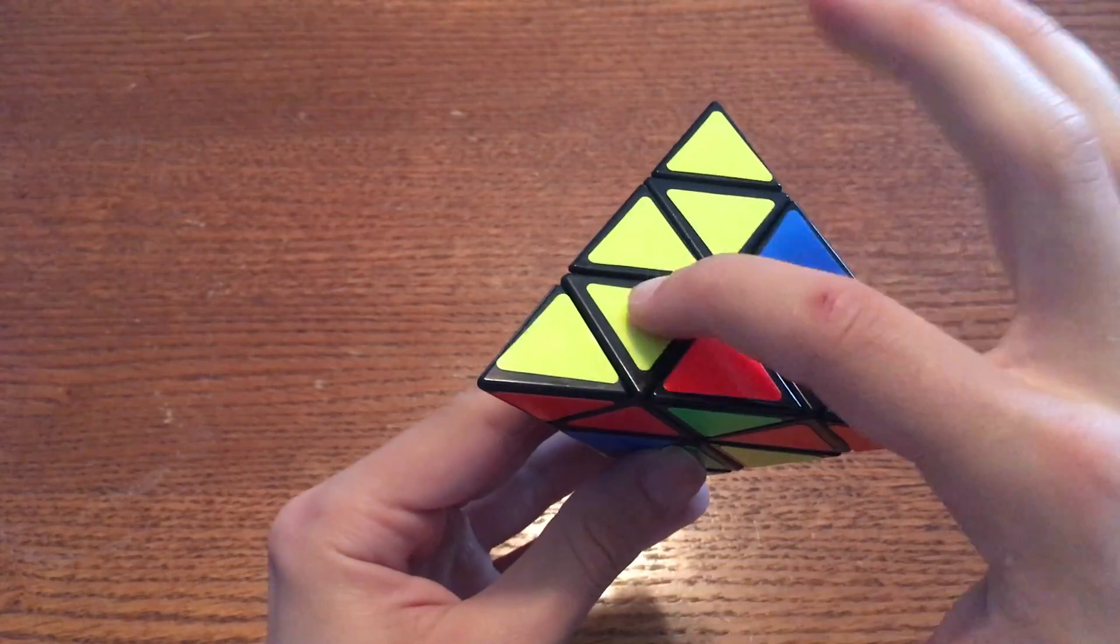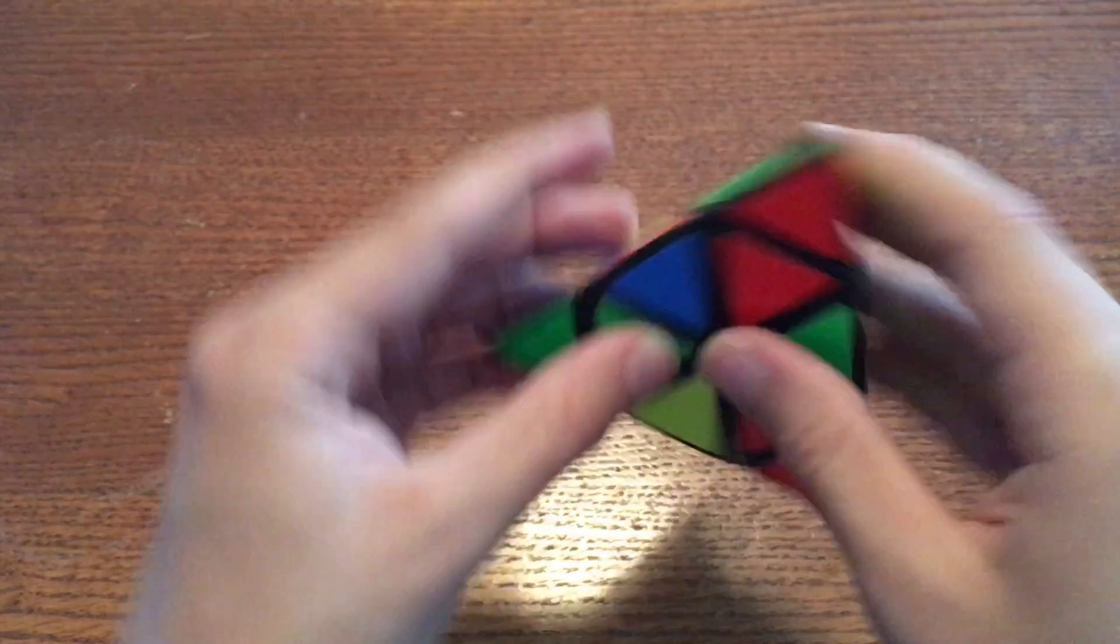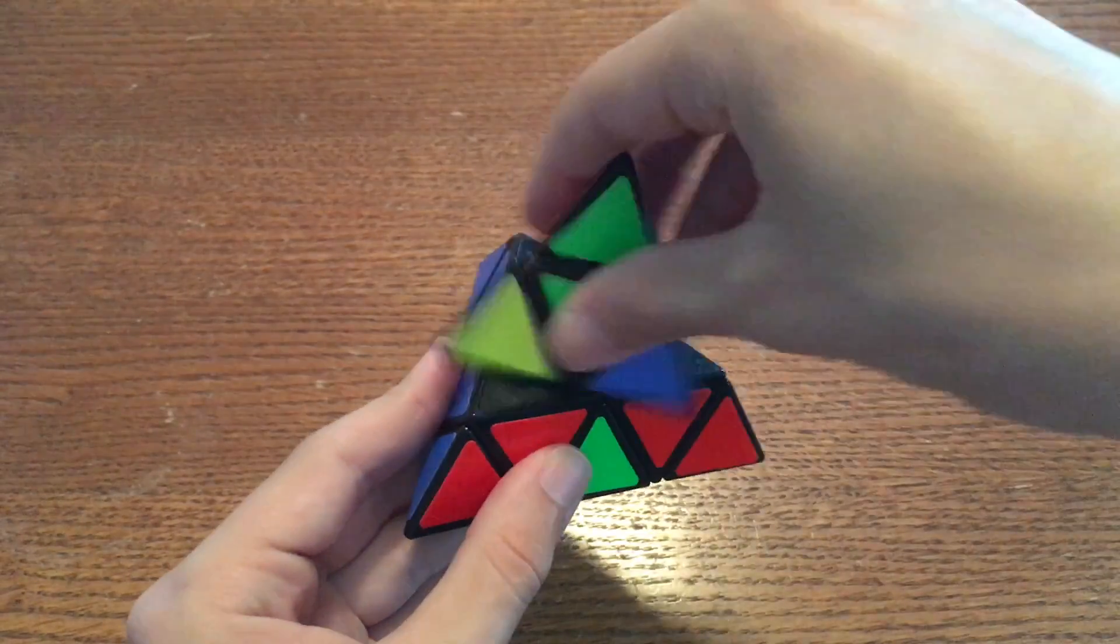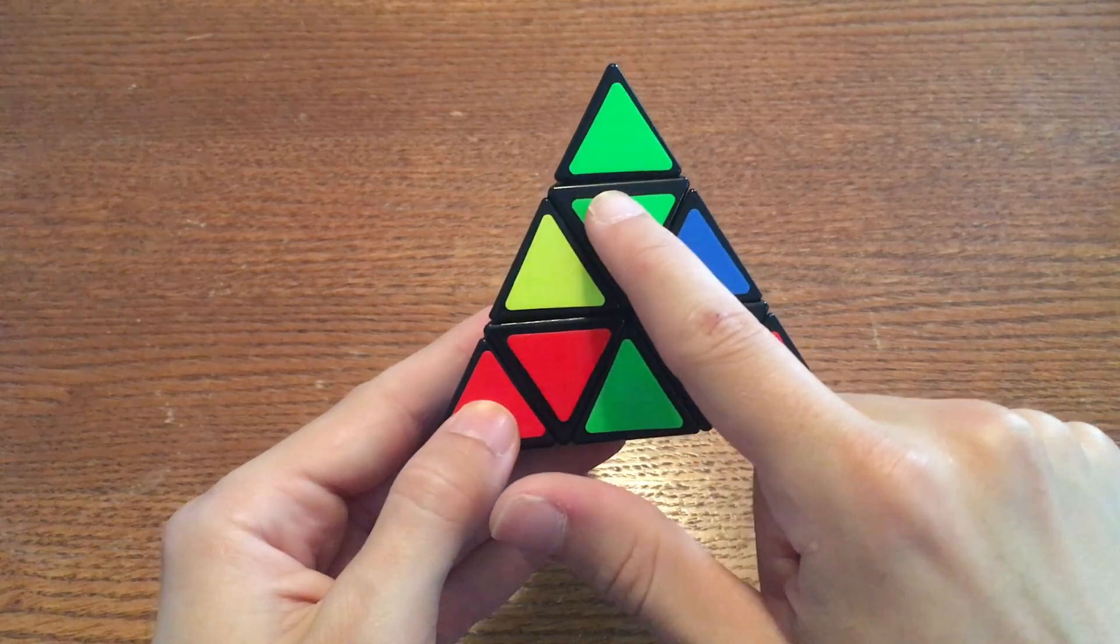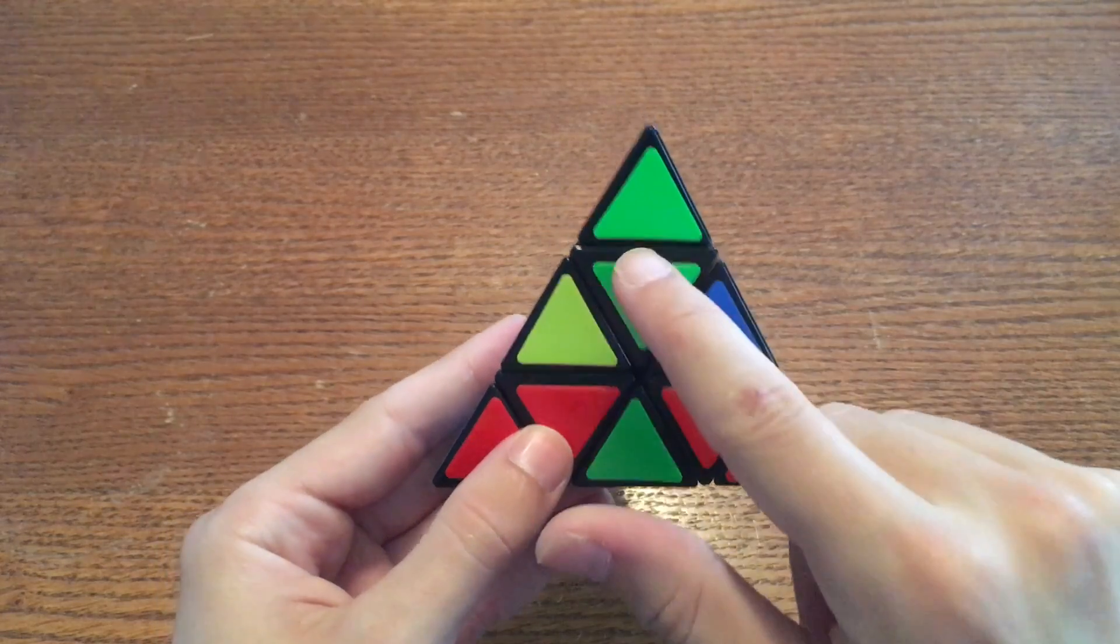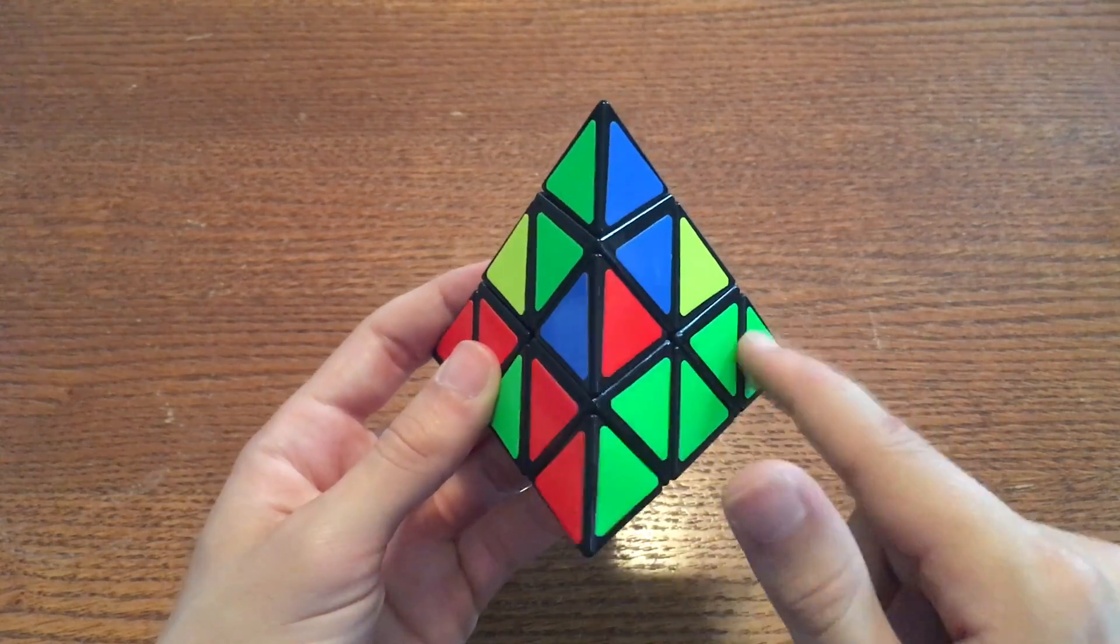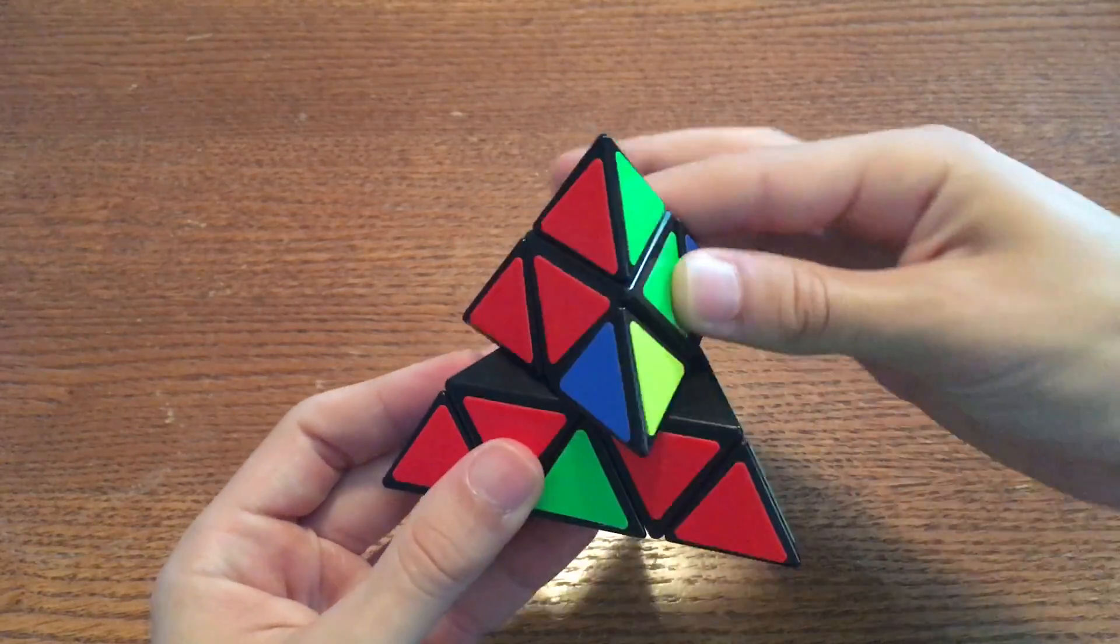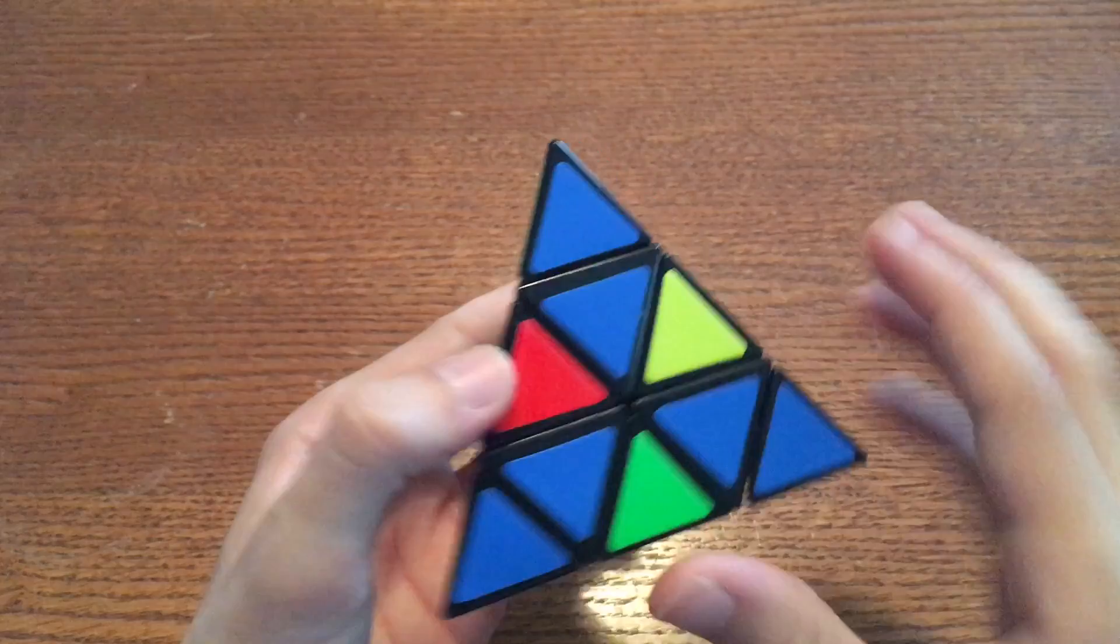Once you get all three yellow centers on this face, hold the puzzle so that this face is on the bottom. Now take this top chunk and rotate it so that this top center is the same color as the two bottom centers. So I see that the top center is green and the two green bottom centers are over here. So I just rotate once to the right and all the centers on the puzzle are solved.